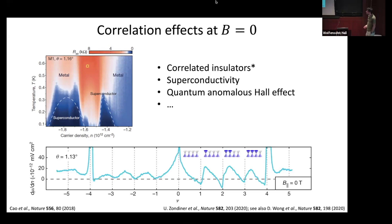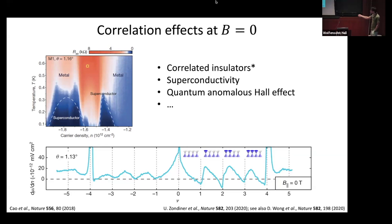I'll put an asterisk on 'correlated insulators': when you do a transport measurement, you see a resistance peak with insulating temperature dependence. But if you measure electronic compressibility — as in a measurement from Shahal Ilani's group using a scanning single-electron transistor — at half filling there's no peak in inverse compressibility expected for a gapped phase. Instead, you get a characteristic sawtooth pattern. So a resistive feature does not guarantee a truly gapped electronic system. This sawtooth pattern will come back later.